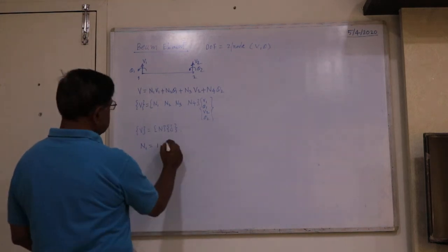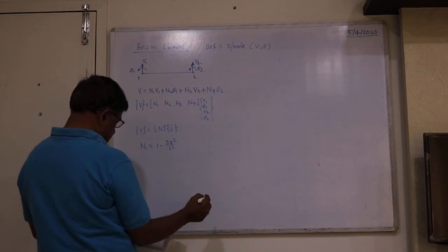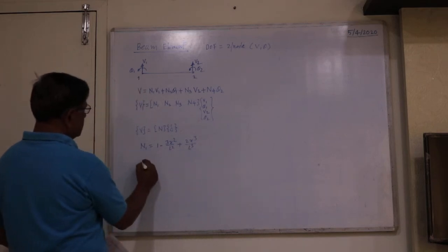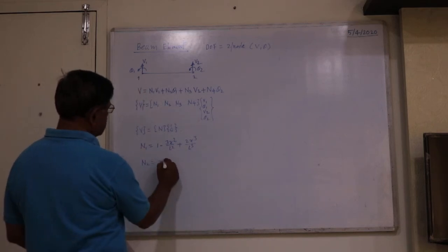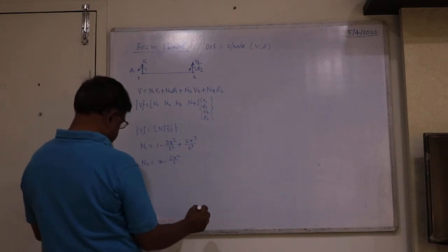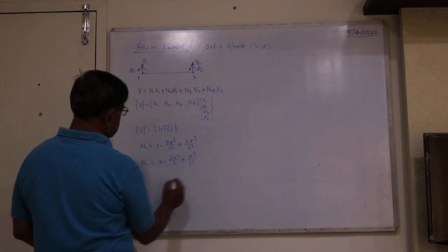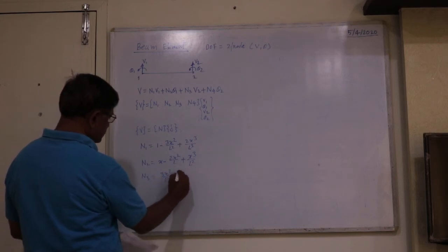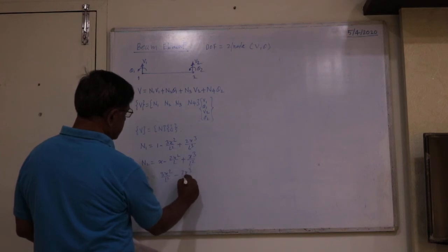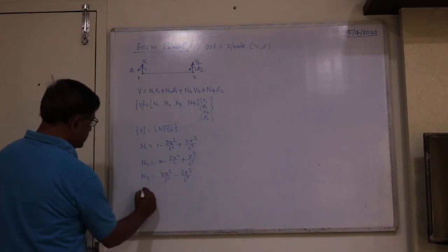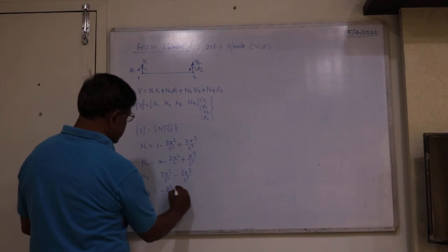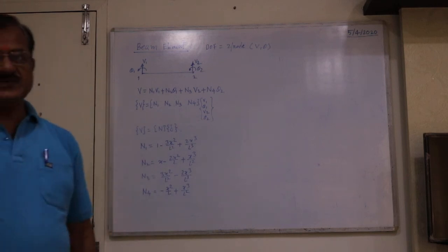The beam shape functions (Hermite functions) are: N1 = 1 − 3x²/L² + 2x³/L³; N2 = x − 2x²/L + x³/L²; N3 = 3x²/L² − 2x³/L³; N4 = −x²/L + x³/L².